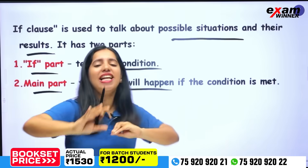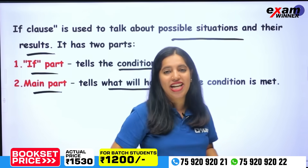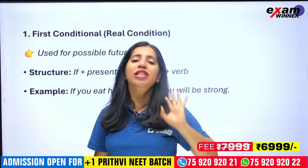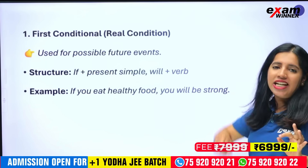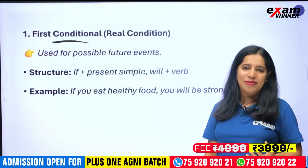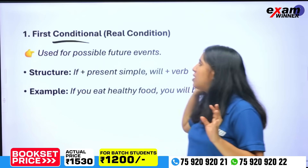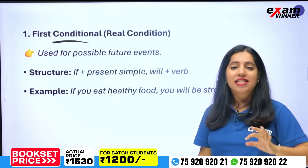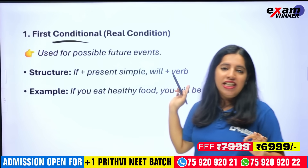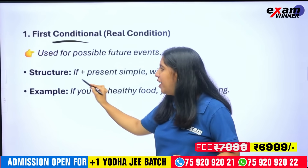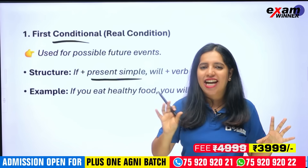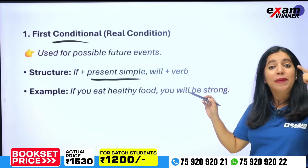If you are doing this condition, the result will be made in the main part. The main part is just once. There are three conditions. The first condition is the real condition — it is used for possible future events. Look at the structure: in the if part, it comes to present tense — Simple Present. If I am doing this, you will get the same thing in the Simple Present.